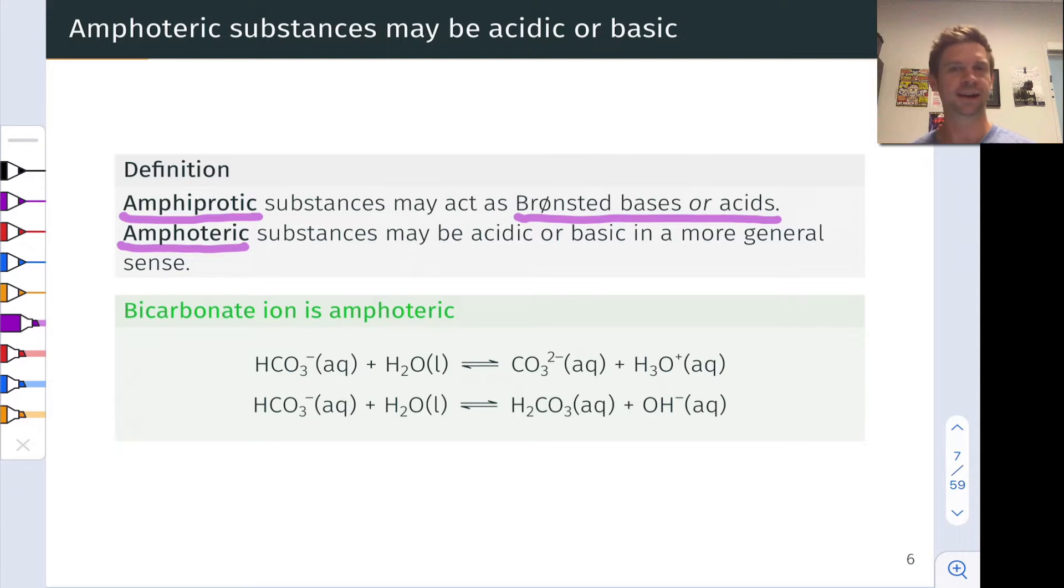Bicarbonate anion is a great example of an amphoteric molecule. It's got a proton which has the capacity to be lost. HCO3- has this H+ built into it and when that H+ is transferred to H2O we end up with H3O+ and the conjugate base of HCO3- which is CO32-. Make sure you understand why CO32- is the conjugate base of HCO3-.